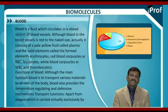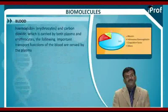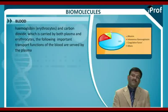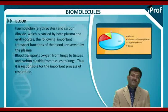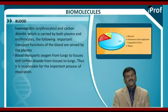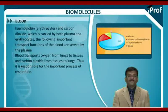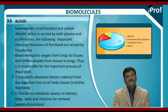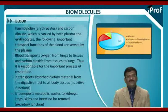Apart from oxygen, which is carried virtually exclusively by hemoglobin in erythrocytes, and carbon dioxide, which is carried by both plasma and erythrocytes, the following important transport functions of the blood are served by the plasma. Blood transports oxygen from lungs to tissues and carbon dioxide from tissues to lungs, making respiration possible. It also transports absorbed dietary materials from the digestive tract to all body tissues, acting in a nutritive function.